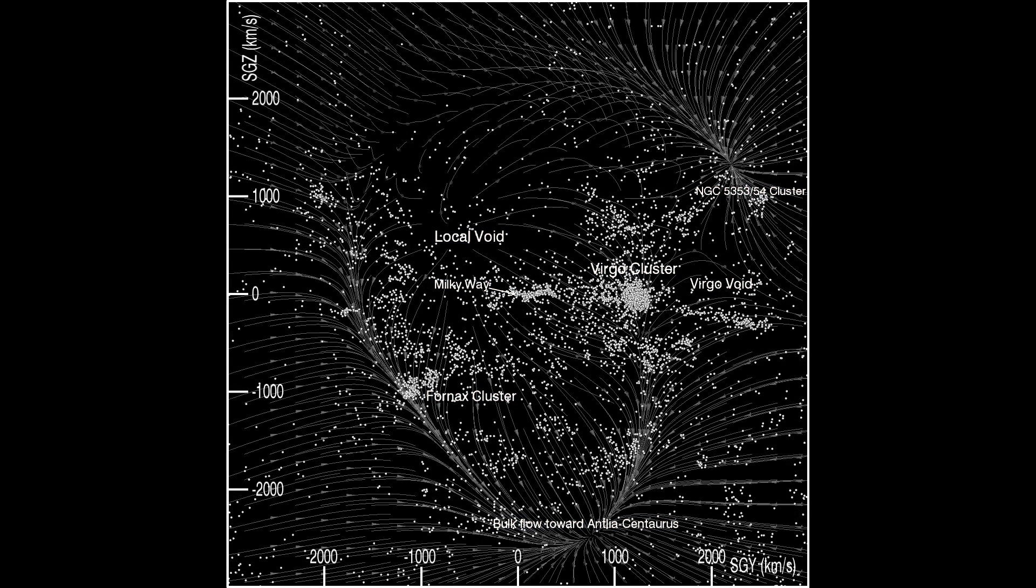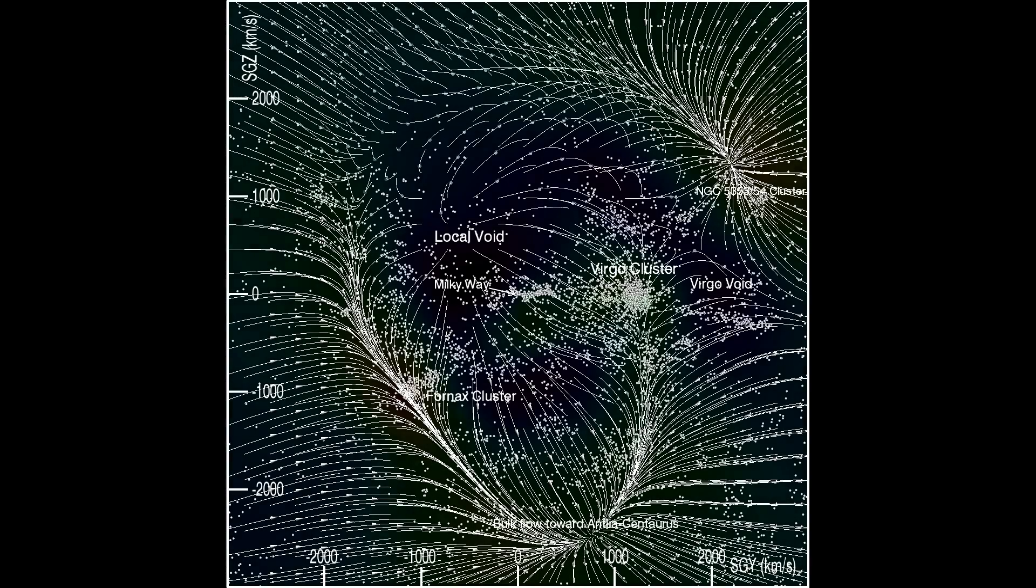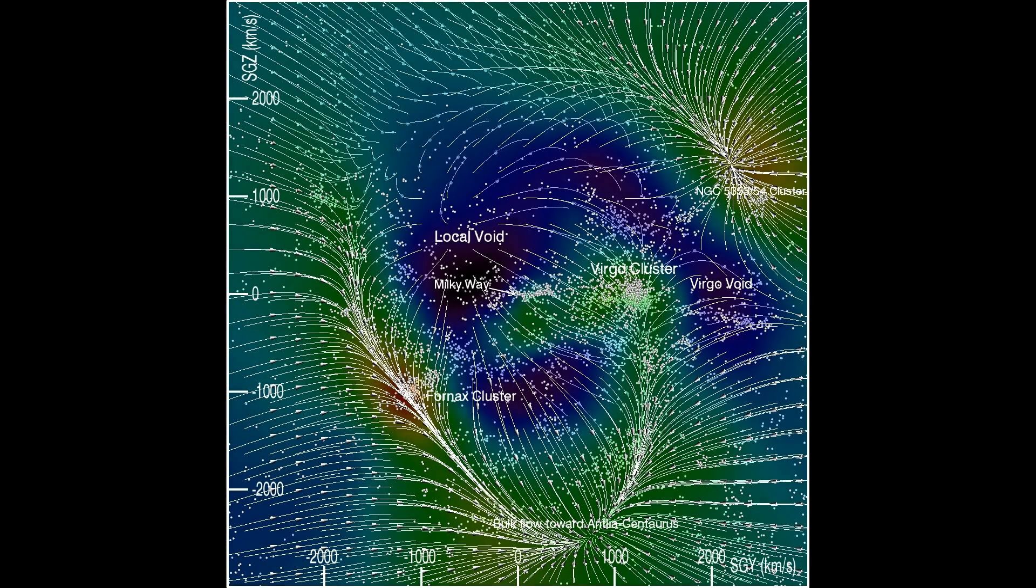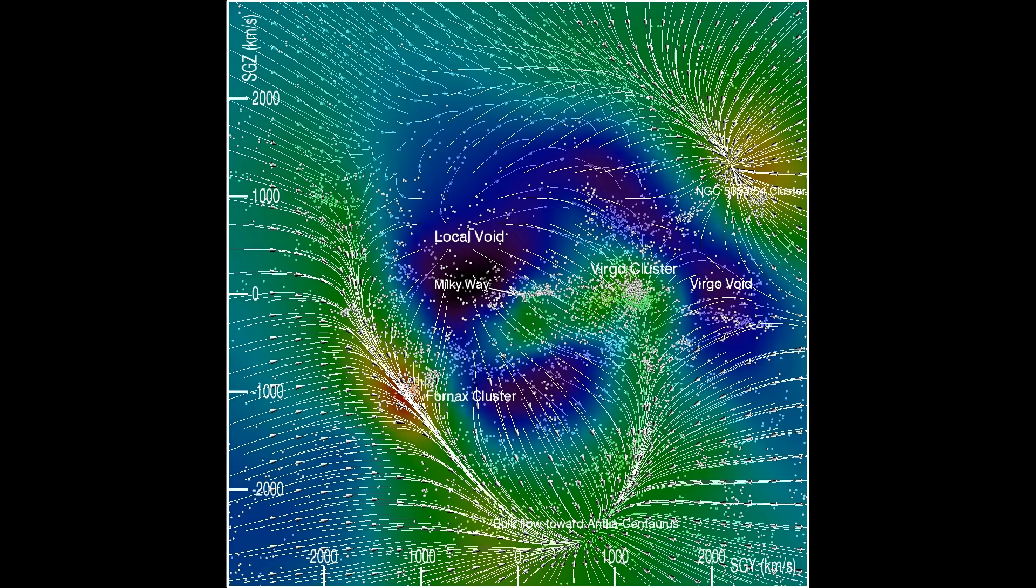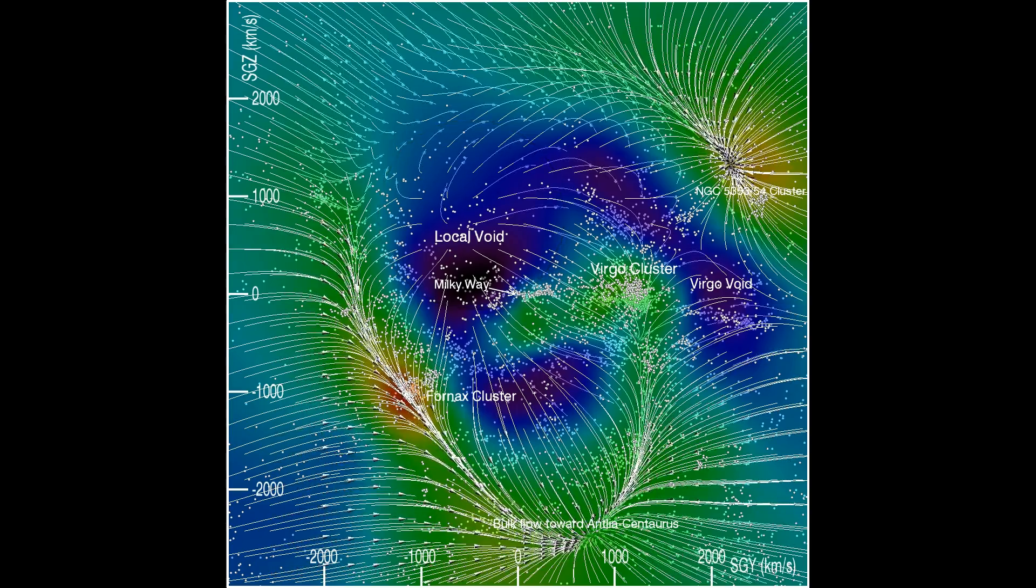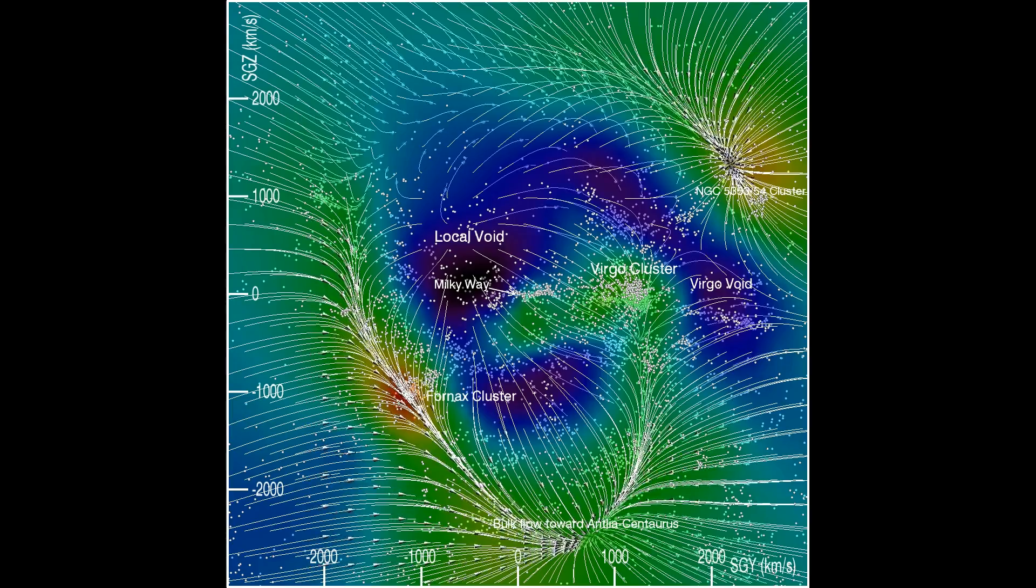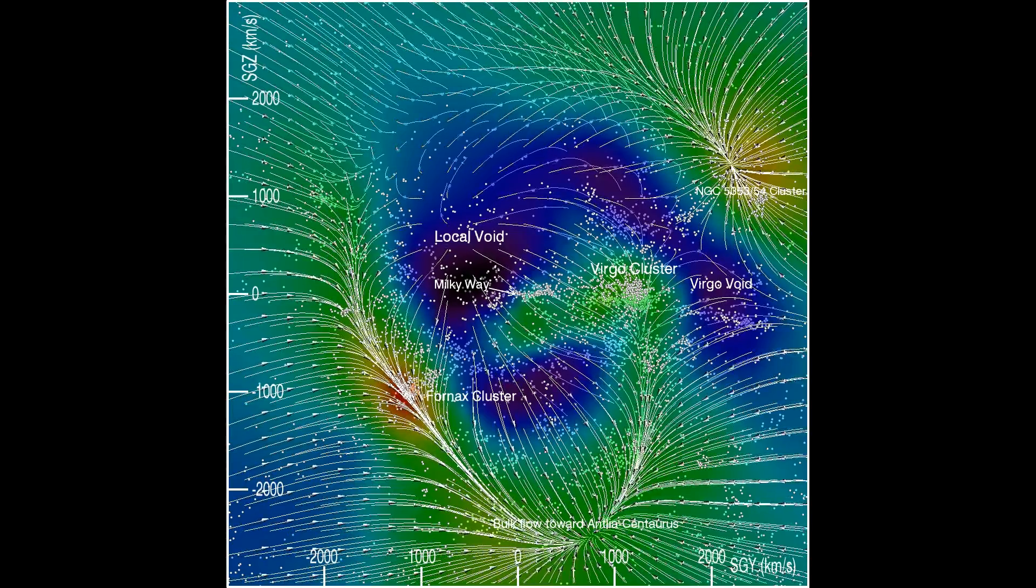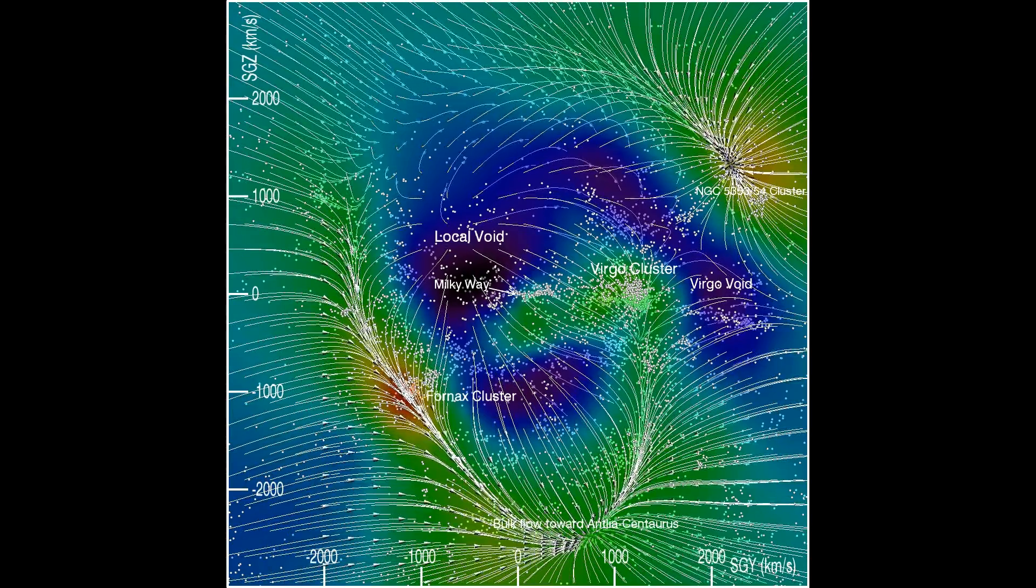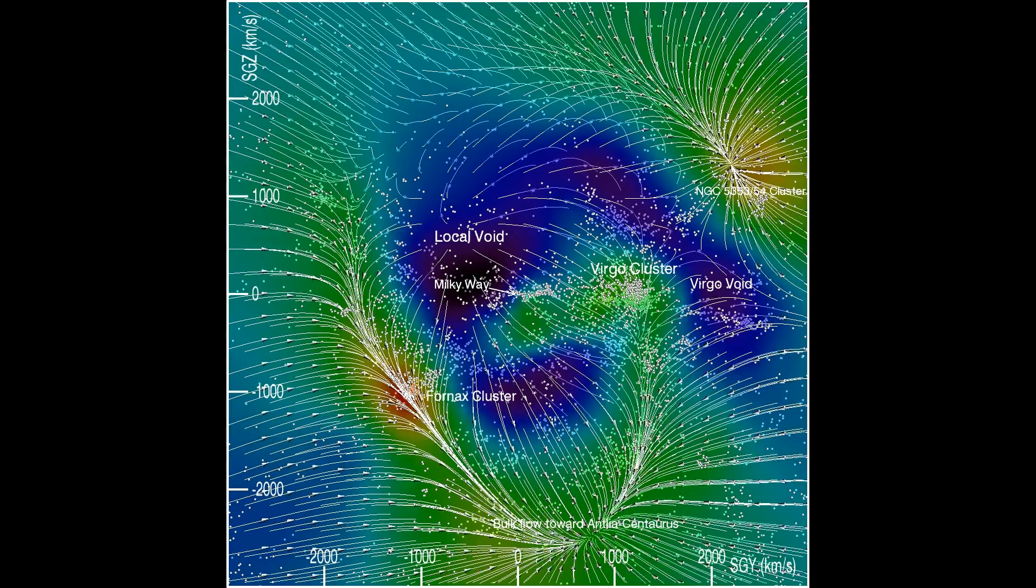Now we see the streamlines of motion and underlying density field. Particularly, note the outflow from voids and the particular prominence of the local void. The present analysis must fail to represent the true extent of the local void, because it extends beyond the domain of distance measurements. The Wiener filter reconstruction returns to mean density, where there are no constraints.